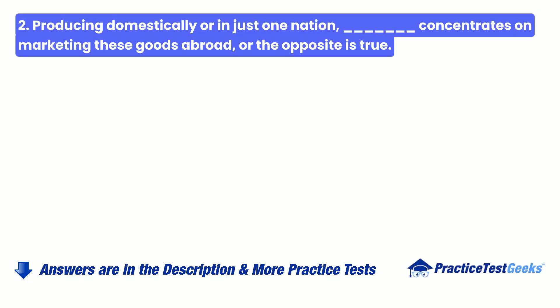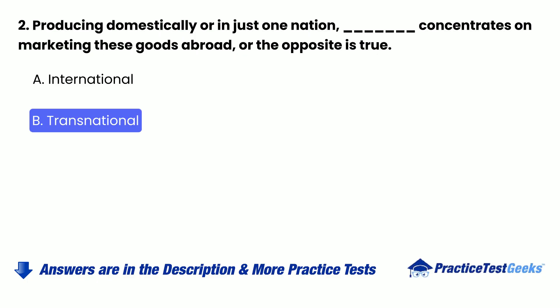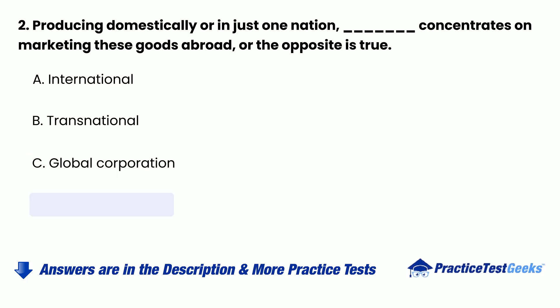Question 2: Producing domestically or in just one nation, blank, concentrates on marketing these goods abroad, or the opposite is true. A. International, B. Transnational, C. Global Corporation, D. None of the above.